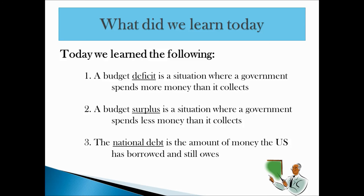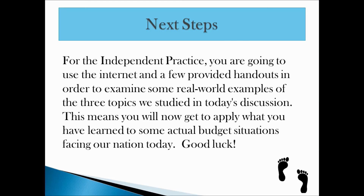So a recap — what have we looked at? The first thing we did was define a deficit, which is a situation where a government spends more money than it takes in. We then looked at a budget surplus, which is not nearly as common, but it's when a government takes in more than it pays out. And finally, we looked at national debt, which is when you take all of those deficits, add them together, and you pretty much get your national debt — it's the amount of money that we still owe that we haven't paid back as a nation. For your independent practice, you're going to use the internet and a few handouts I've provided to look at some real-world examples of these topics and apply what we've learned today to some real budget situations. Thank you for watching.